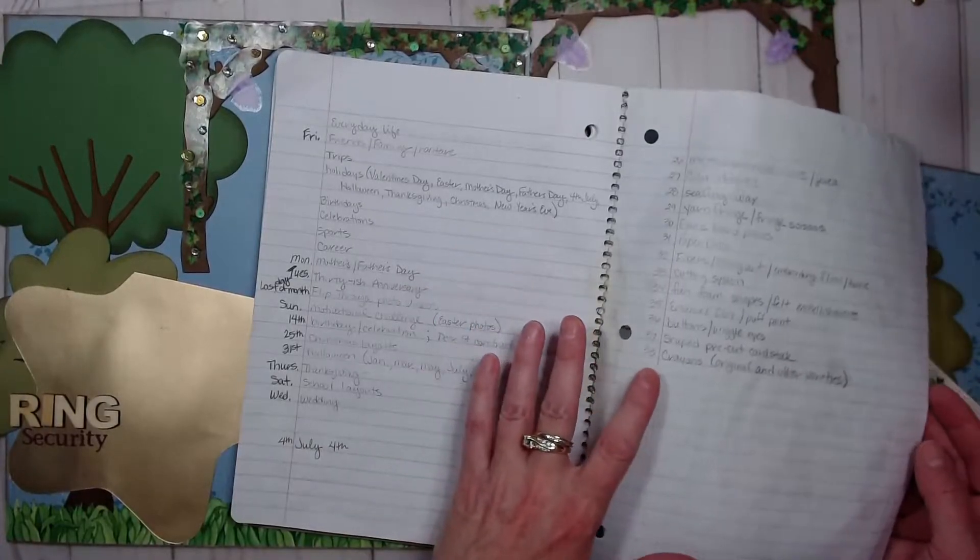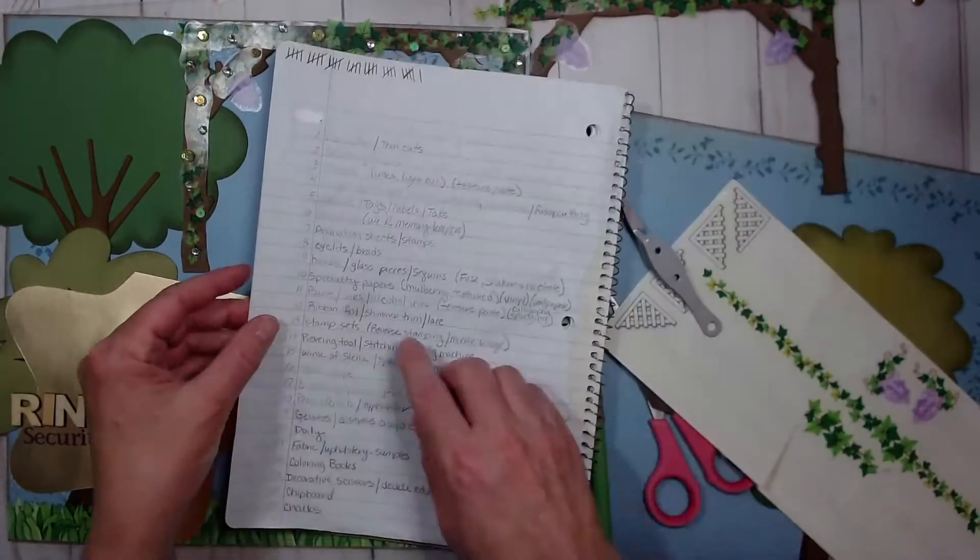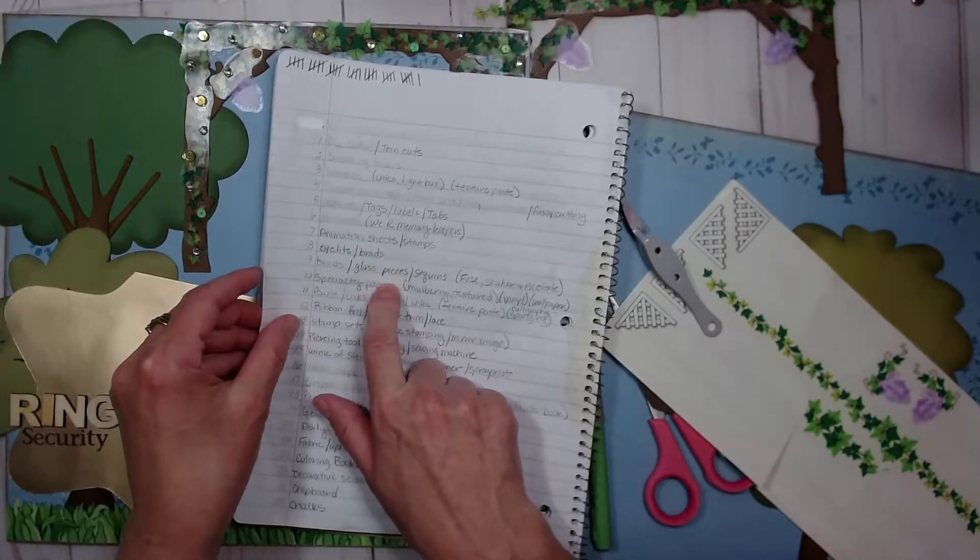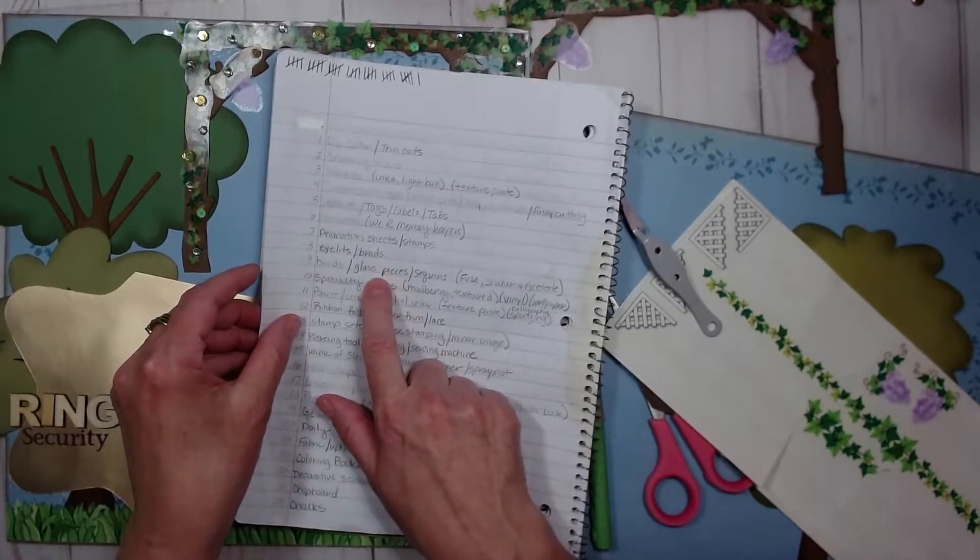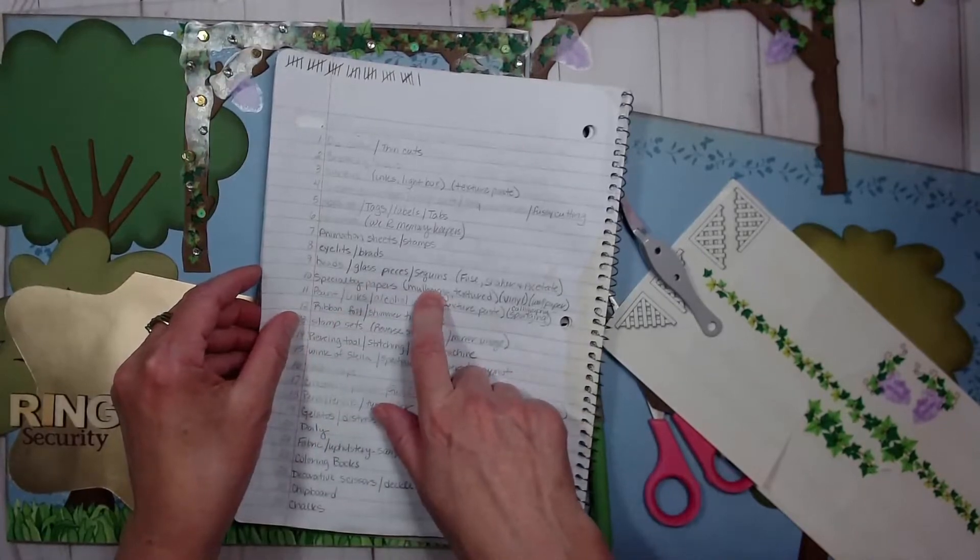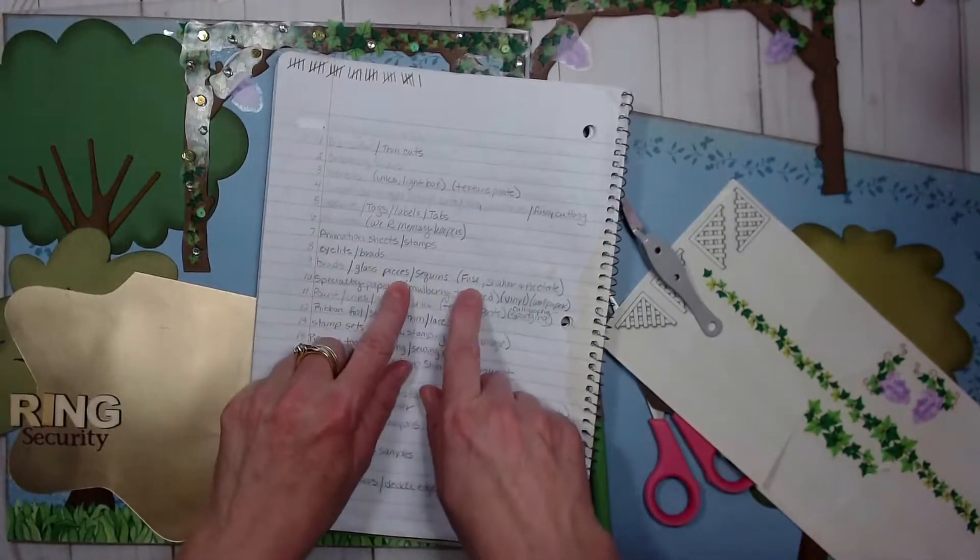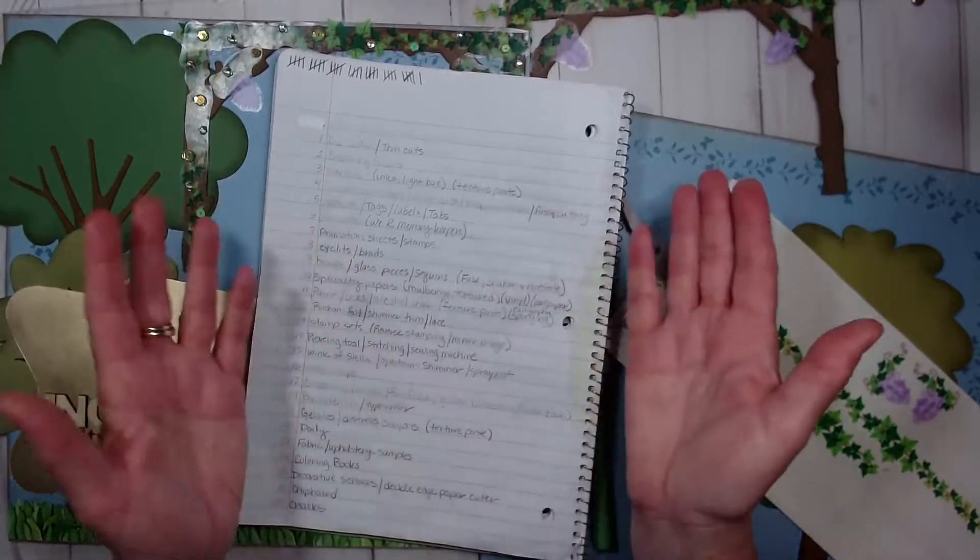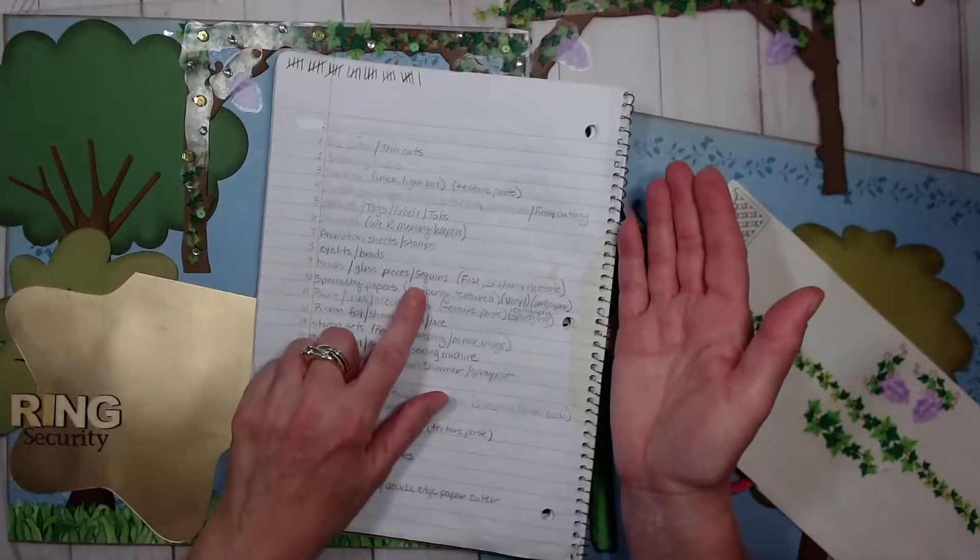Number nine is beads, glass pieces which I used in last week's wedding where I made the path, and sequins. Along with that I could choose to use my fuse tool or make a shaker using acetate. Today I've chosen to use sequins.